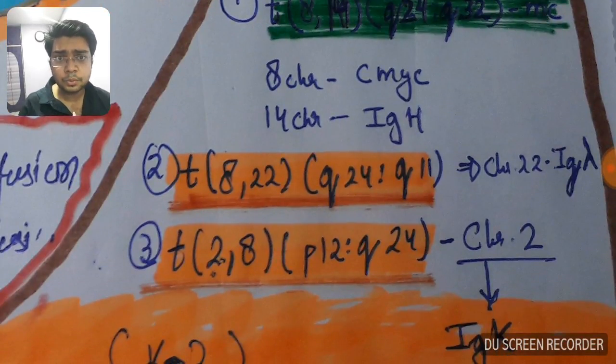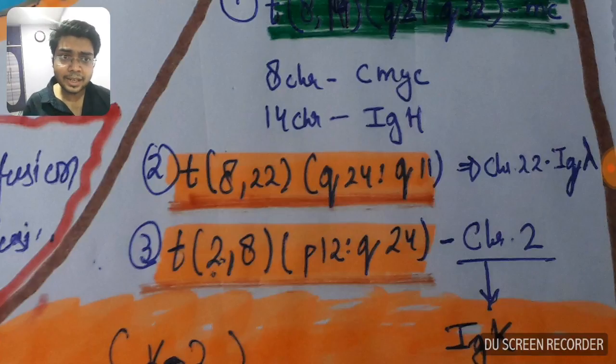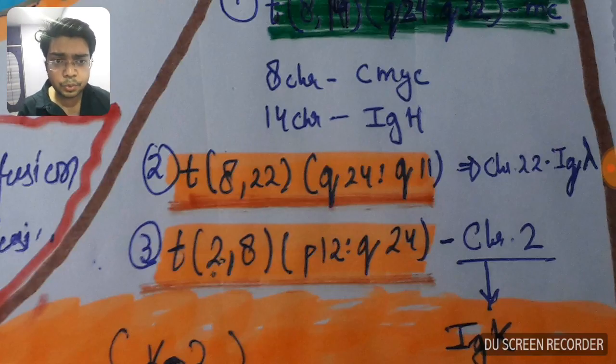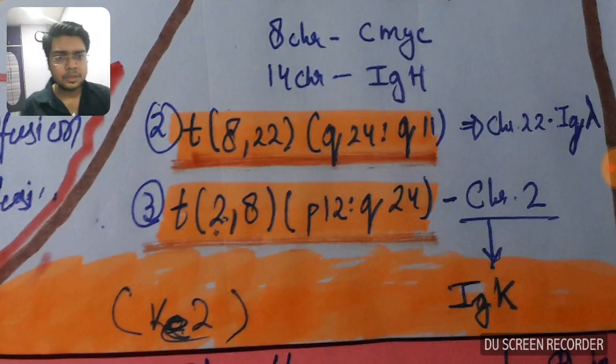The second type t(2;8), the 8 is C-MYC and 22 is IG lambda, means light chain. And in third, that is t(2;8), the 2 belongs to IG kappa. How you can remember, just revise it frequently so that you remember it.